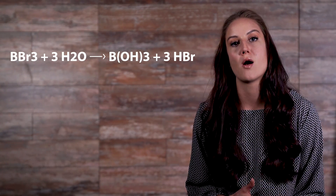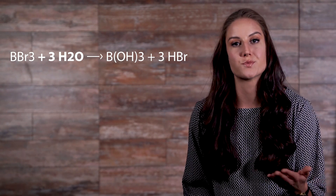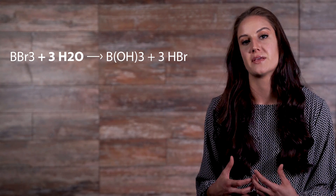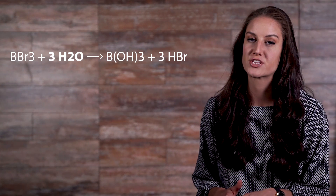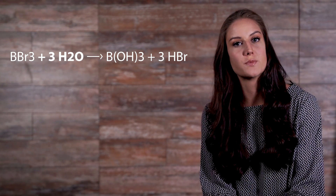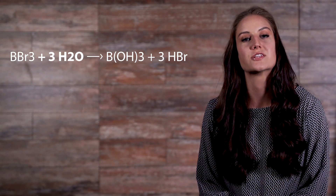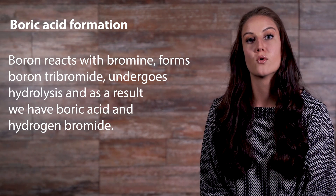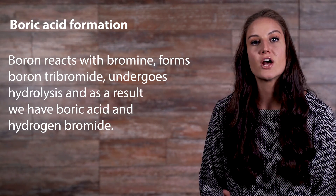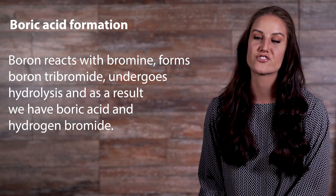When boron-tribromide comes into contact with water and reacts, it undergoes hydrolysis. Here's what that looks like: when the boron-tribromide reacts with water, the molecules are broken apart, which is what hydrolysis is. Hydrolysis is a double replacement reaction, which means that the anions and cations from each compound will switch places during the reaction. This is exactly what we need to happen, assuming we want one of our products to be boric acid. In our product, we have two new compounds: boric acid and hydrogen bromide. So boron reacts with bromine, forms boron-tribromide, then boron-tribromide undergoes hydrolysis, and as a result we have boric acid and hydrogen bromide.